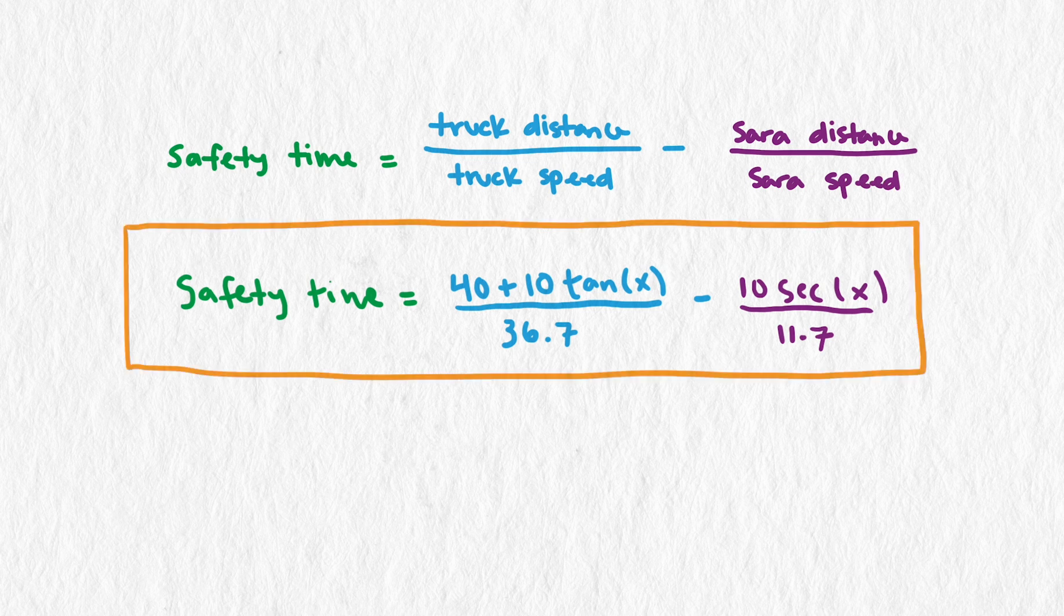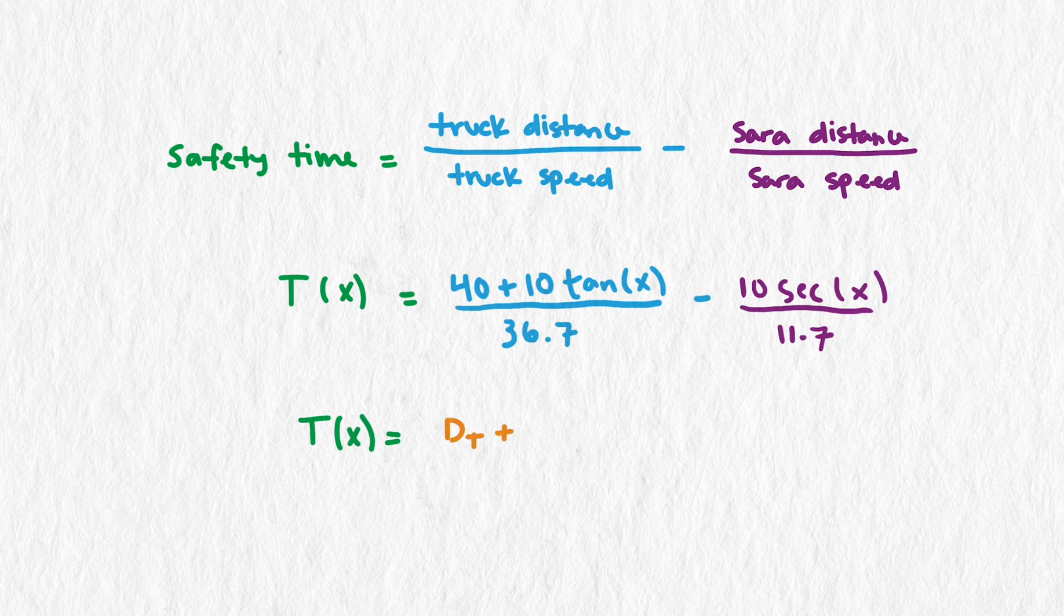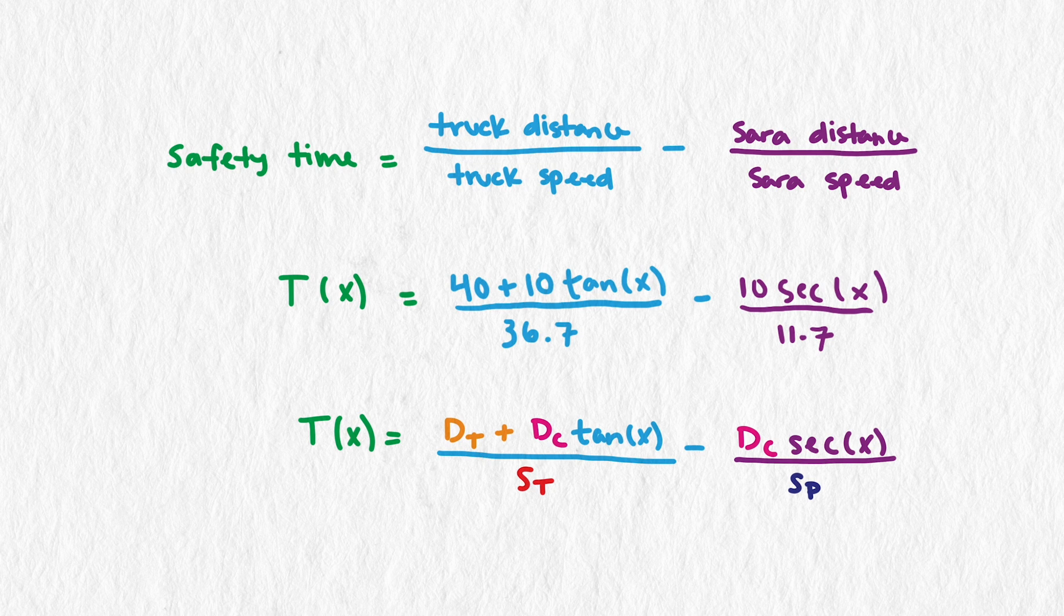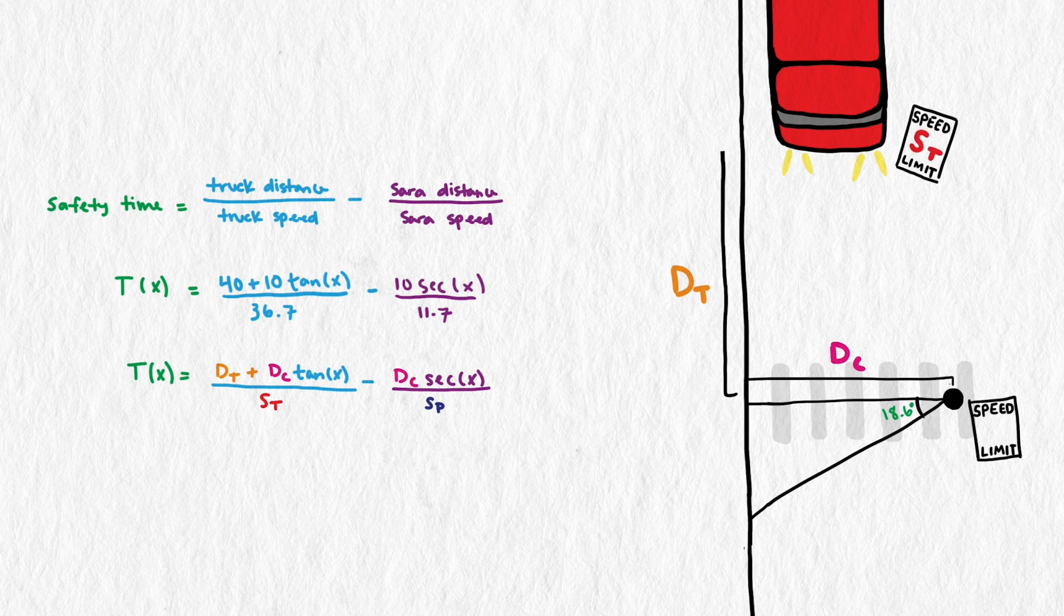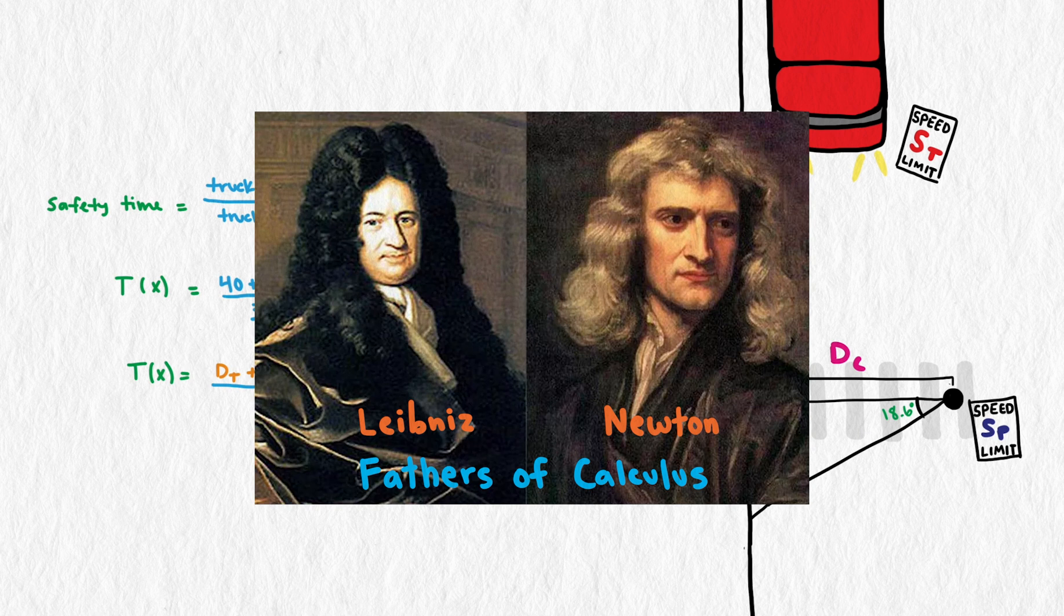Here's the model from the last video with the distances and speeds we used initially. Below that model we have displayed our general model on the screen with two different distances and two different speeds as parameters. The two distances are the initial distance between the pedestrian and the truck and the initial perpendicular distance between the pedestrian and the curb. In this video, we will use calculus to find the optimal angle in terms of these parameters.